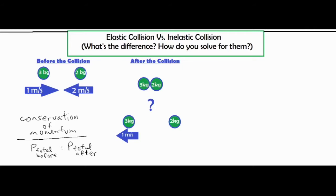Inelastic collisions are often defined by two objects that stick together, which is known as a perfectly inelastic collision, and elastic collisions are often defined by two objects that separate from one another. That's a definition many teachers use, but it's not technically 100% correct.